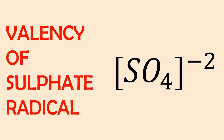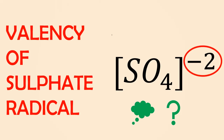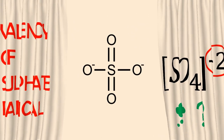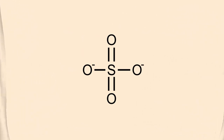In this video we will show how and why the sulfate radical has minus two valency. The chemical formula of the sulfate is SO4, meaning four oxygen atoms are combined with one sulfur atom.